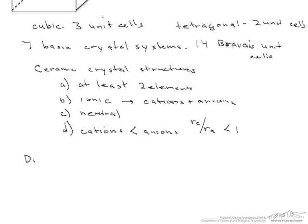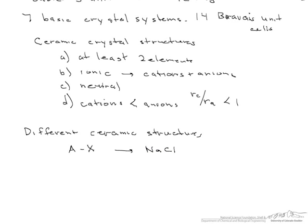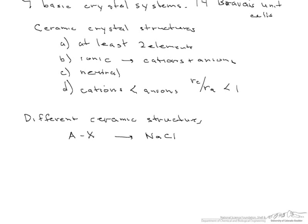So we have different types of ceramic structures. The most basic one is what's known as the AX structure. An example of that is sodium chloride. There's one anion for each cation. In addition, we can have a system such as AMXp such that M and or P do not equal one. An example of this would be something like calcium fluoride.